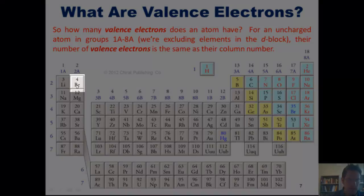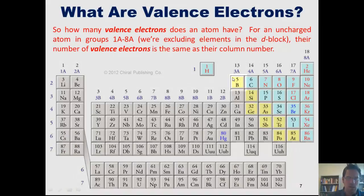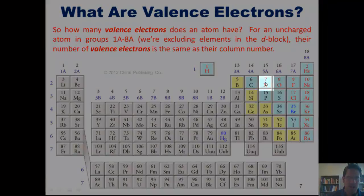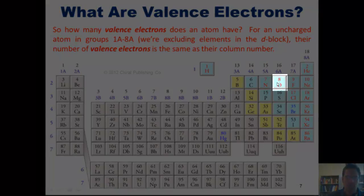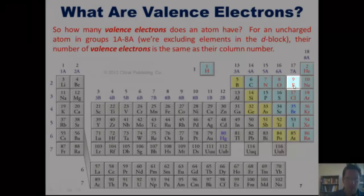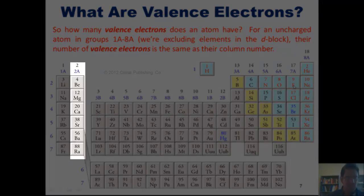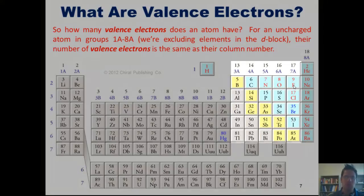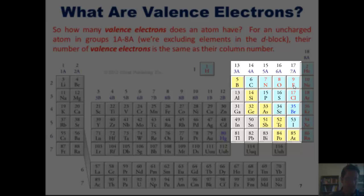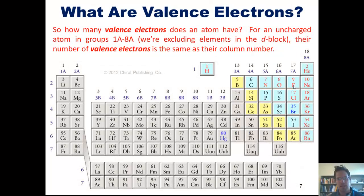Similarly, beryllium has two valence electrons, boron has three valence electrons, carbon has four, nitrogen has five, oxygen has six, and fluorine has seven. Why? Because these elements are in groups 2A, 3A, 4A, 5A, 6A, and 7A, respectively. Hence, the column number in which an element is found on the periodic table corresponds to its number of valence electrons, if the atom is uncharged.